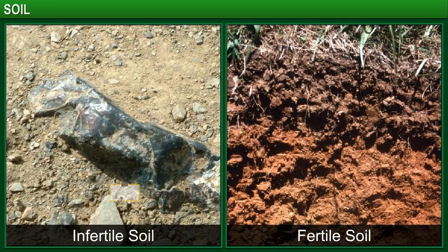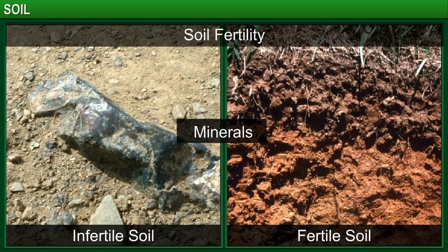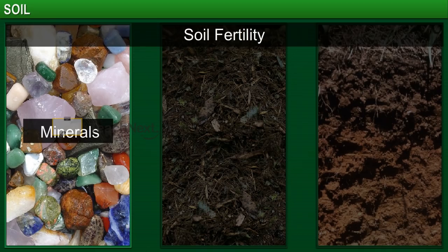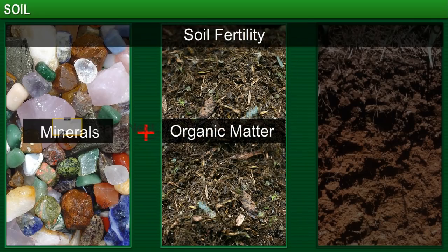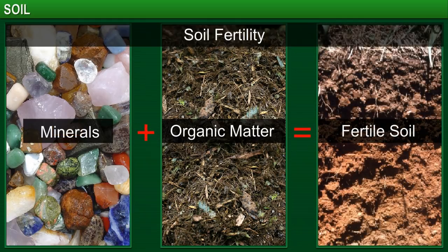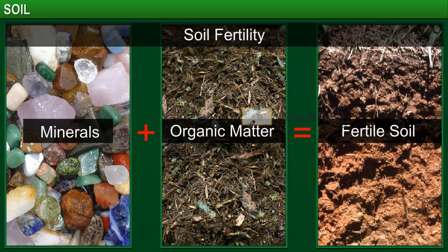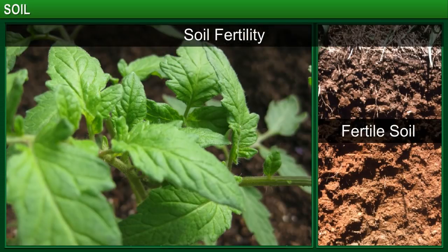It takes hundreds of years for just one centimeter of soil to form. During weathering, rock debris gets mixed with organic matter and minerals, which help to increase the fertility of the soil. When minerals and organic matter are present in the right proportions, the soil is said to be fertile. Fertile soil is capable of giving life to and supporting the growth of plants.